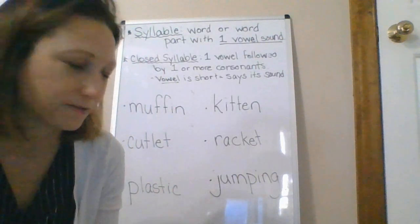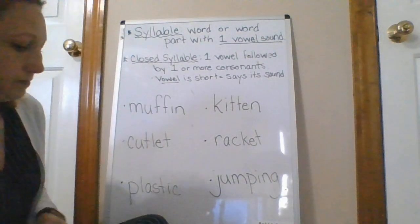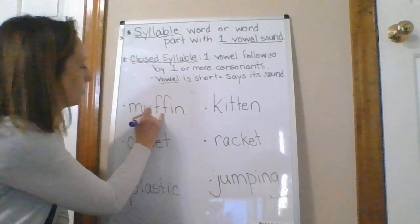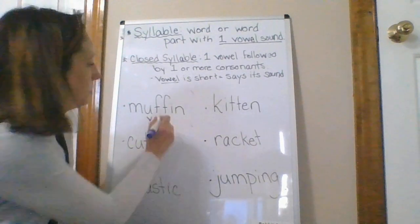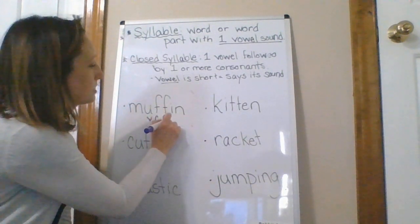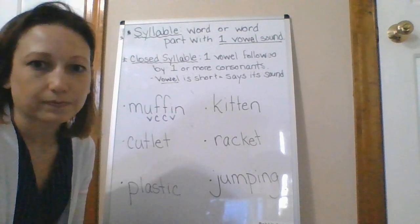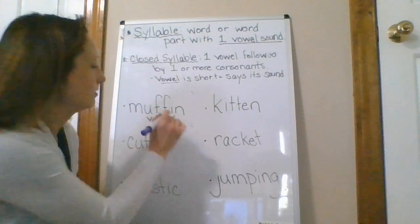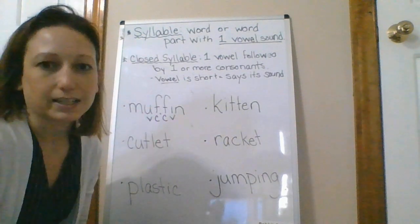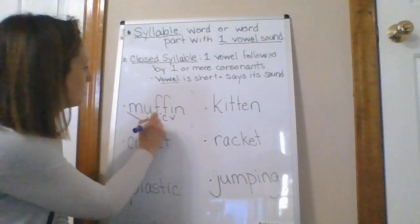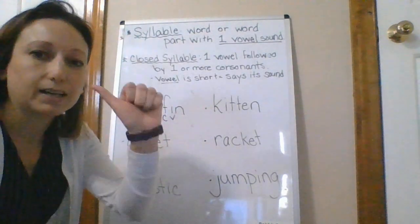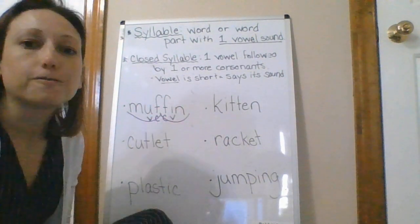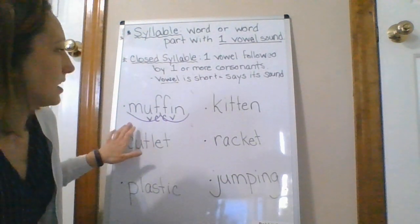Let's practice a few of these. Looking at our first word, we find our first vowel — the U. Then we have consonant, consonant, vowel. This is easy because we've got the two F's right there together. So I divide right between the consonants, between the two F's, and scoop it. My first syllable is 'muff,' which is a closed syllable, and my second syllable is 'fin.'